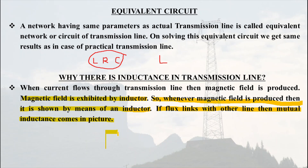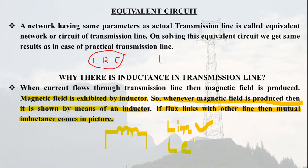There are two main inductances in a transmission line. One is internal inductance and another is external inductance. The external inductance or mutual inductance is due to mutual flux, and the internal inductance or self inductance is due to internal flux. In this video we will cover internal inductance only — our main focus will be on internal inductance.